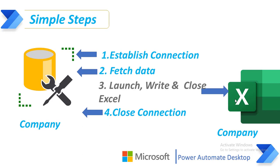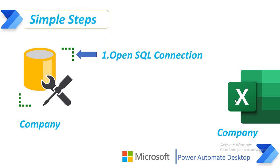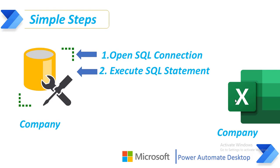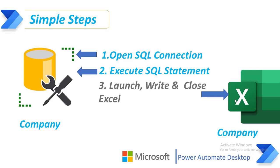Once writing the data has been completed and the connections have been established with the SQL Server, I will close the connection. These are the four simple steps I will follow. To establish the connection with the SQL Server, I will use the open SQL connection action. To fetch data, I will use execute SQL statement. For Excel, I will use launch Excel, write to Excel worksheet, and close Excel. Finally, I will close the SQL connection using close SQL connection.